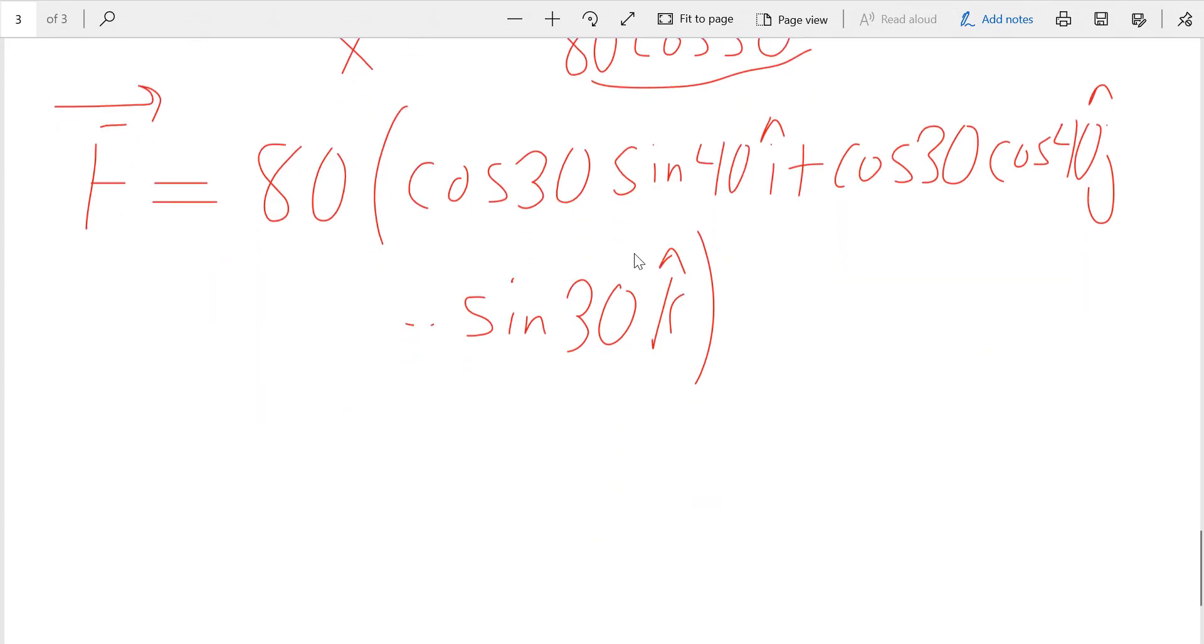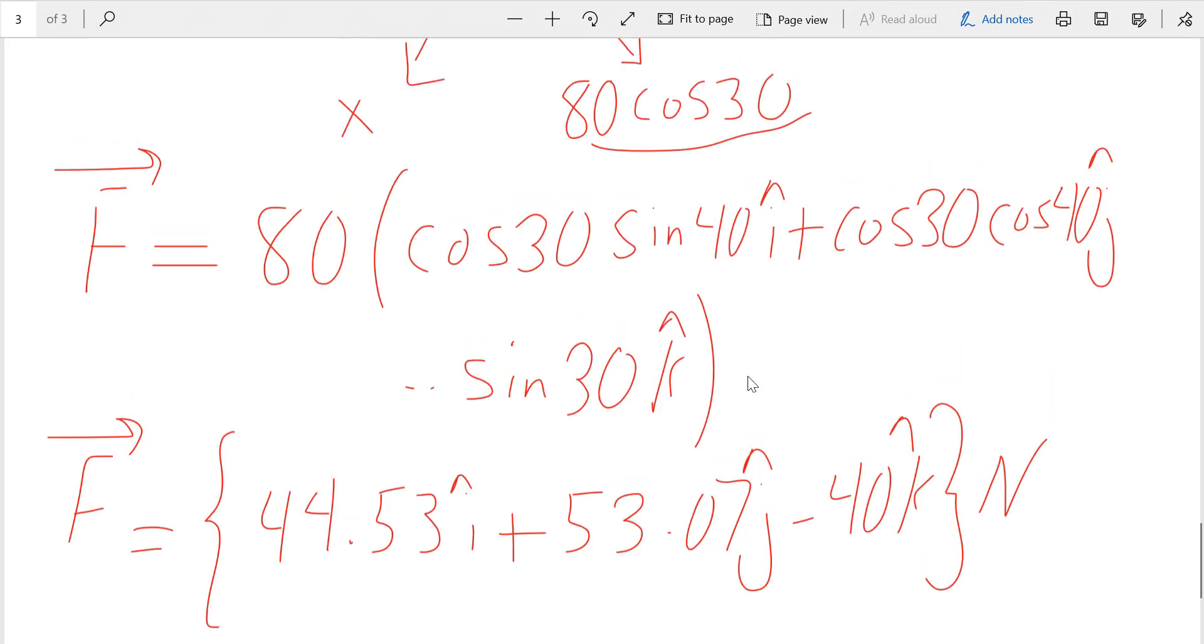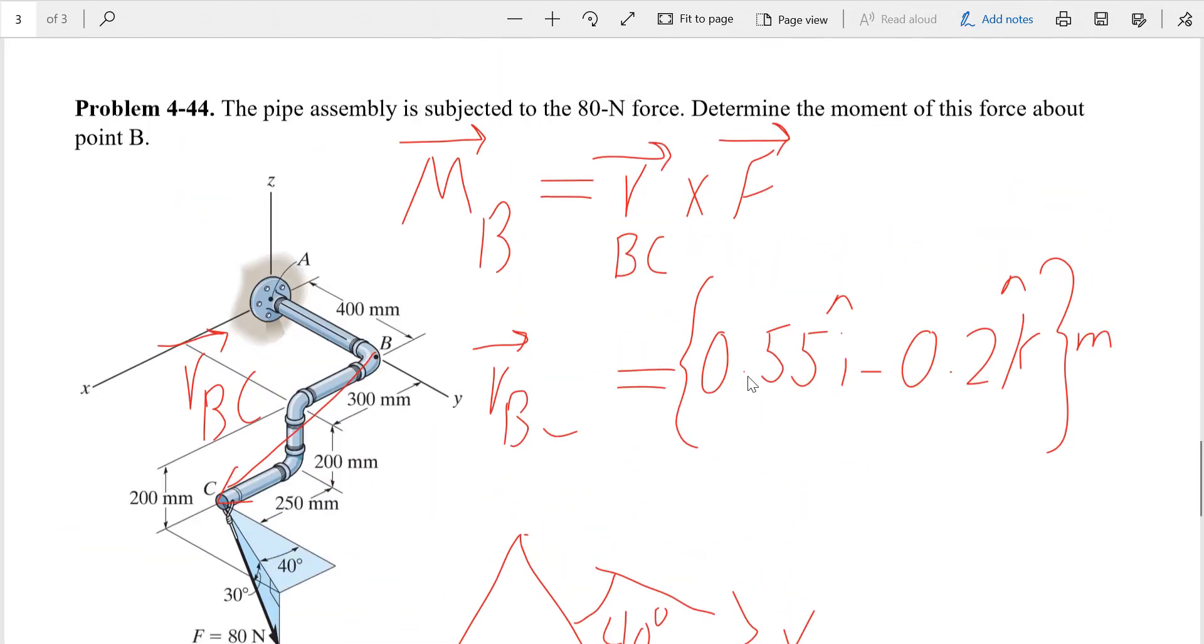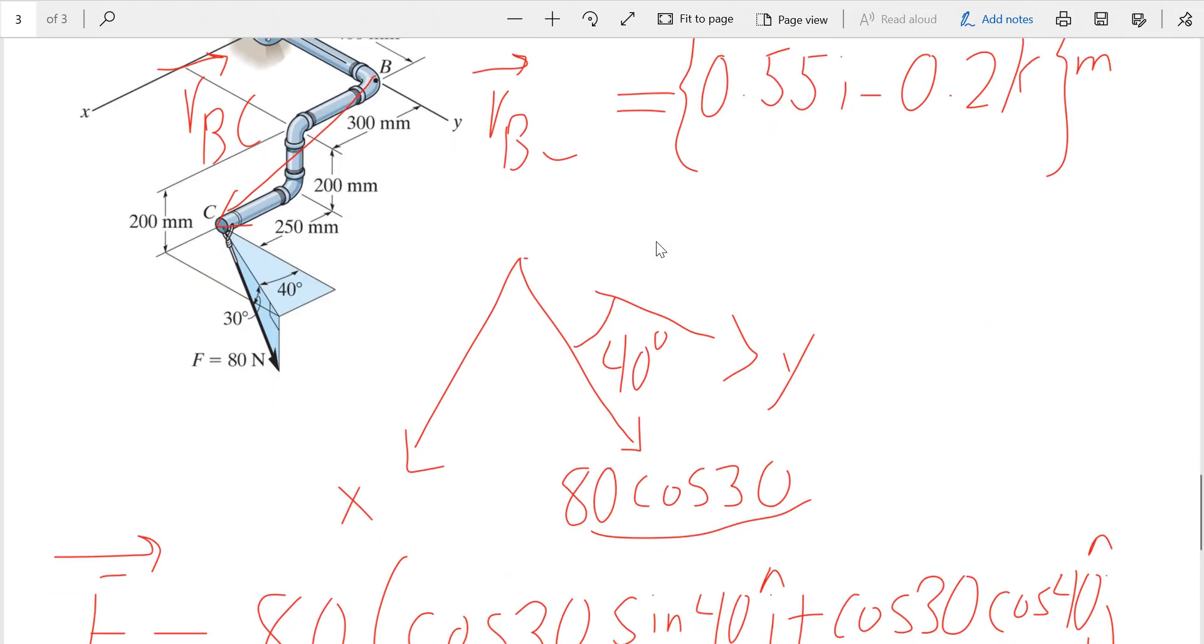So my force F after simplification would be 44.53i plus 53.07j minus 40k Newtons. I found my force F in Cartesian form and I have my position vector, so after that it's just a simple cross product.